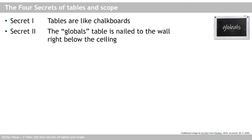Secret two is that this chalkboard that you see here is the globals table, and it is nailed to the wall right below the ceiling. That means it is literally at the top of your wall — nothing can go above it. Now we need only one more ingredient, or secret, to make a number of things clear.